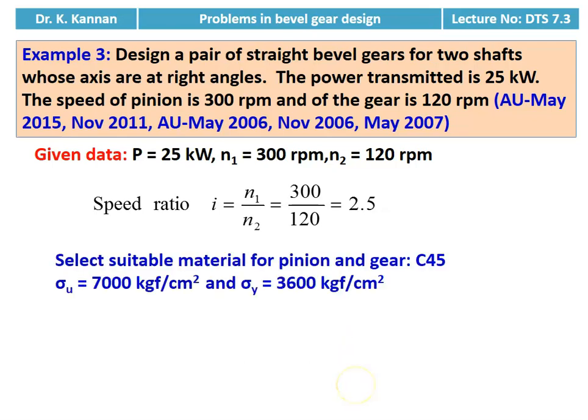Then we select the material. The material is not given in the problem, so we take C45 as the material. We take sigma_u = 7000 kgf/cm² and sigma_y (yield stress) = 3600 kgf/cm² from the data book.